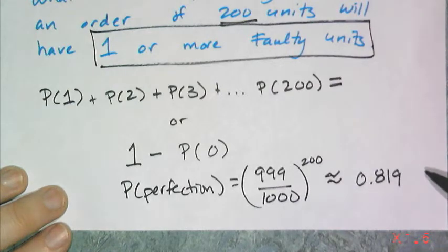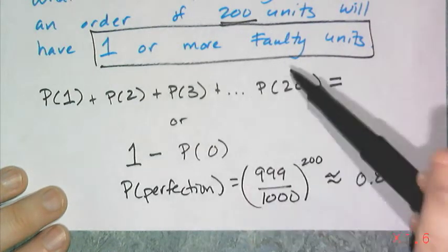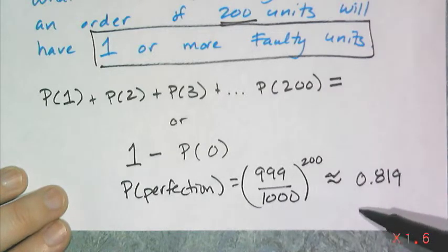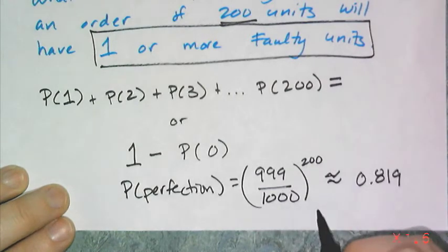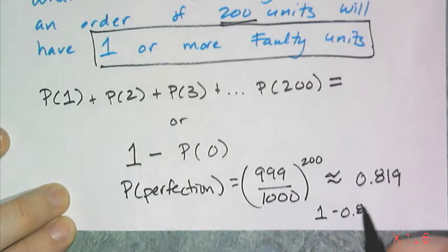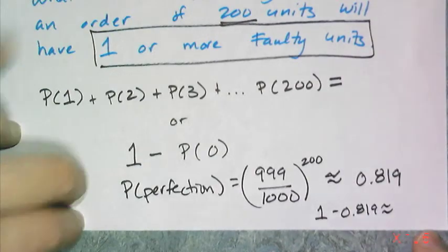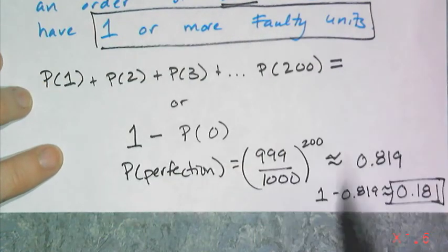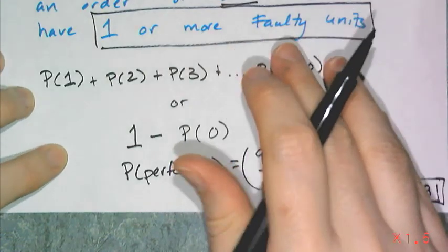The probability that every single one of those 200 units is perfectly functioning is approximately 819 over a thousand. If I want to know if one or more of these units is faulty, I know faulty or perfect add up to 1. So my actual answer is 1 minus 0.819, which is approximately 0.181. That is the probability that one or more units is faulty. So yay.